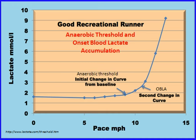As you can see on the graph, this athlete, who is described as a good recreational runner, is beginning to accumulate lactic acid at about 8–9 miles per hour, and OBLA occurs at around 11 miles per hour. A highly trained athlete with an excellent aerobic system would be able to run at a quicker pace — maybe 10 miles per hour for anaerobic threshold and 13 miles per hour for OBLA — due to improved aerobic capacity, delaying the use of the anaerobic or lactic energy system.